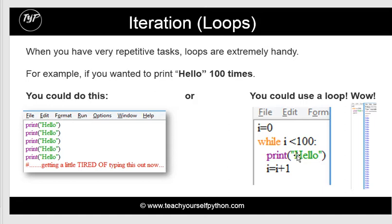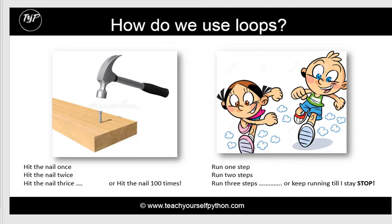Say you wanted to make a hundred stars in a video game — you'd use a loop. Think about how we use loops in real life. Say you wanted to tell someone to hit a nail with a hammer a hundred times. You could say hit the nail once, hit the nail twice, and so on — it's getting boring and it would take a long time. Or you could just define the number of loops needed and say hit the nail a hundred times.